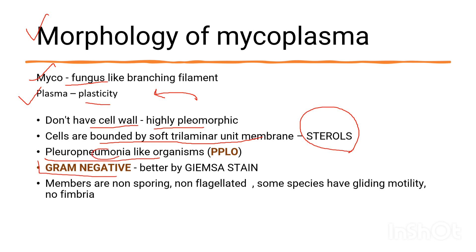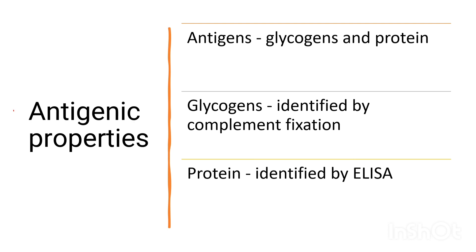Mycoplasma is a gram-negative bacteria and can also be stained by Giemsa stain. It is non-sporing, non-flagellated, and lacks fimbriae. Some species can show gliding motility. Due to its plasticity, it has specific antigenic properties.